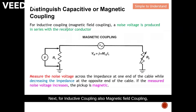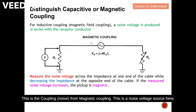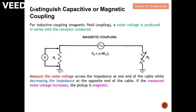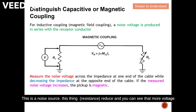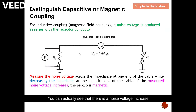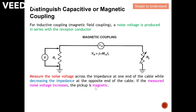For inductive coupling, also known as magnetic field coupling, a noise voltage is produced in series with the receptor conductor. This is the noise voltage source. We measure the noise voltage of the victim, and on the other side we reduce the resistance. You can see that more voltage will fall across the victim's end compared to the source side. There is a noise voltage increase, and when there is a noise voltage increase, we know this is due to magnetic coupling.